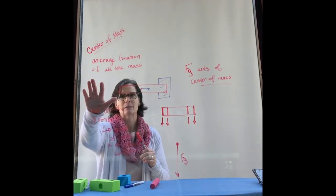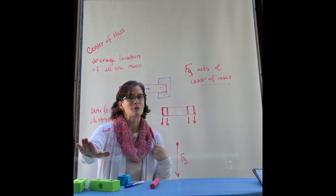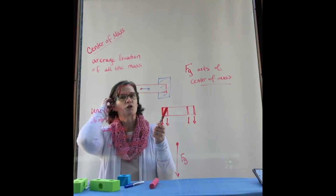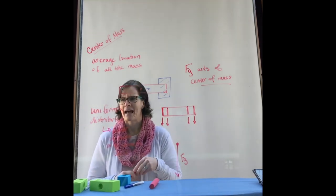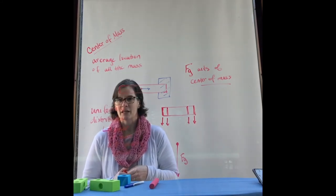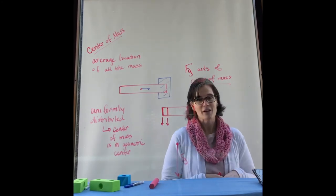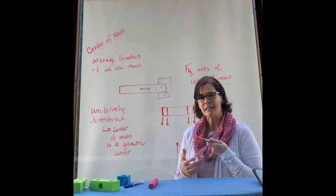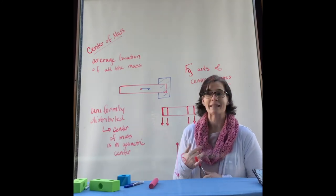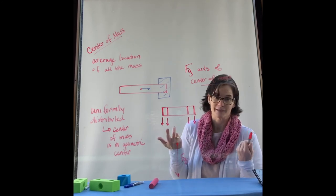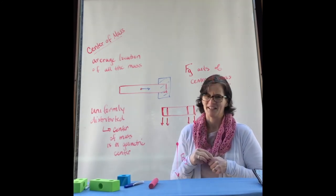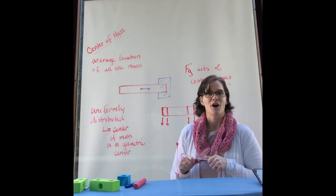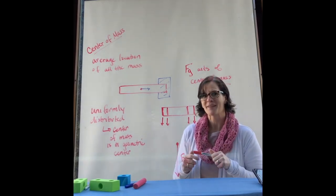The key idea is that center of mass is simply the average location of the mass, and for a uniformly distributed object, that average location is in the geometric center. Most importantly for our torque analysis right now, the force of gravity acts at the object's center of mass. When doing torque analysis with a uniformly distributed object, place gravity at the center of mass. If an object is not uniformly distributed, you'll either be told where its center of mass is or be required to calculate it. We'll use this idea in our torque analysis and come back to it when we discuss rotation further.